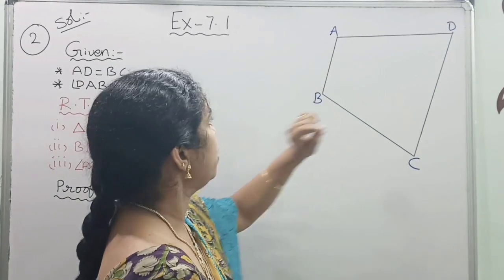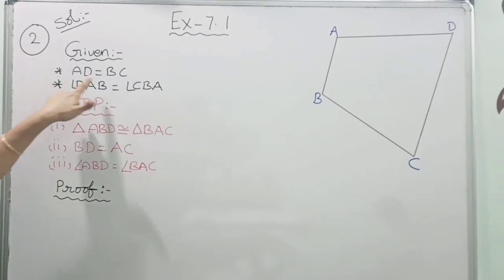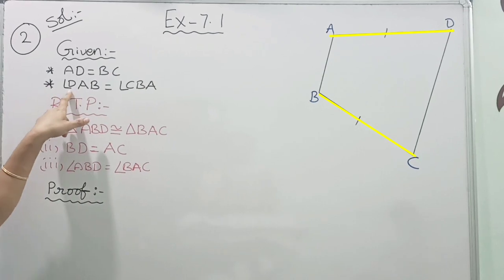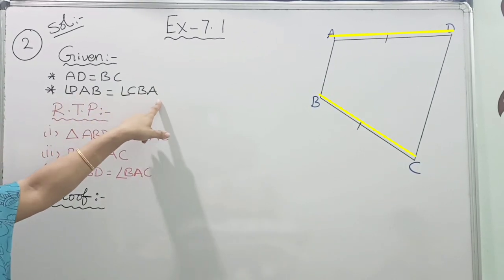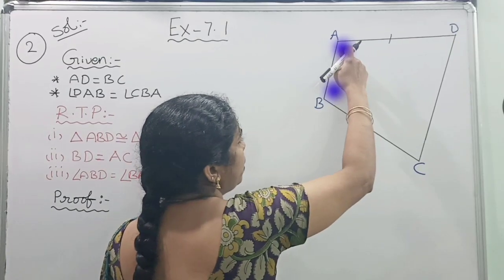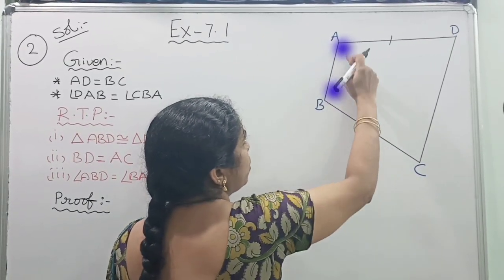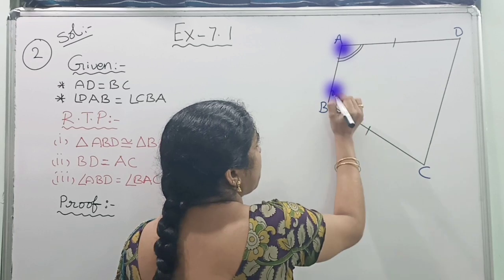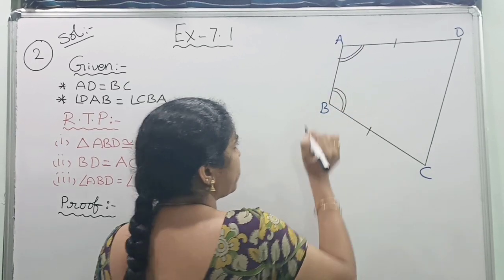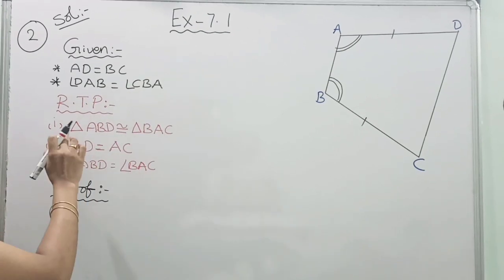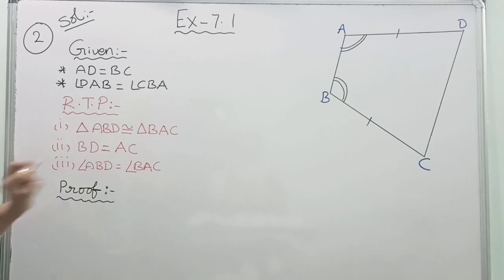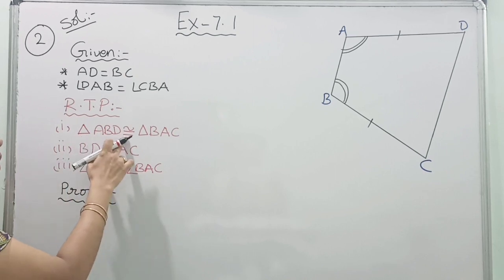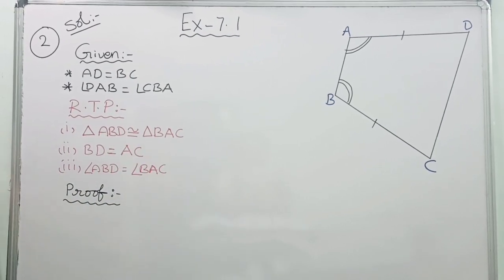In quadrilateral ABCD, given AD is equal to BC, and angle DAB is equal to angle CBA. So these two angles are equal. In the given data we have two equal parts. What is required to prove? Triangle ABD is congruent to triangle BAC. We do not have any triangles yet, so let us join the diagonals to get the triangles.